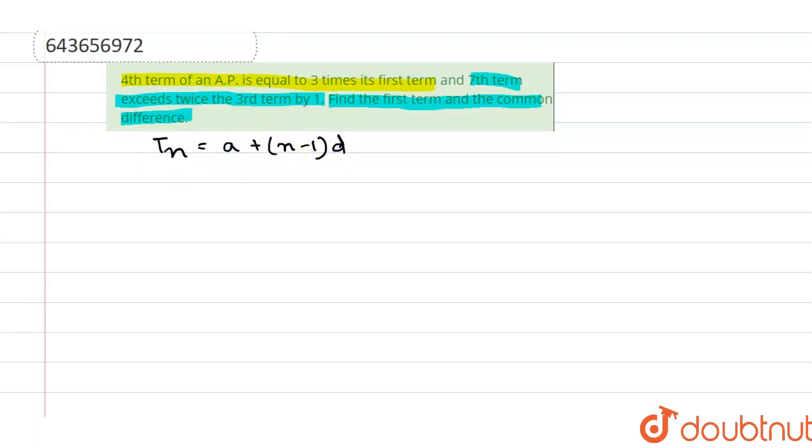Therefore, the fourth term will be equals to a plus 4 minus 1d, that is a plus 3d. Also, the first term of the AP will be equals to a.